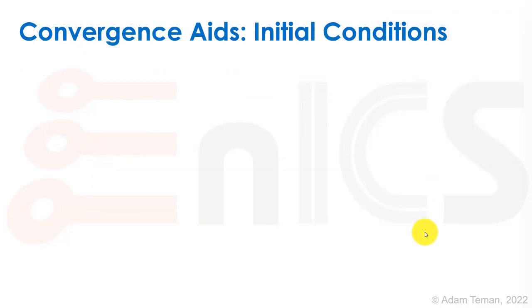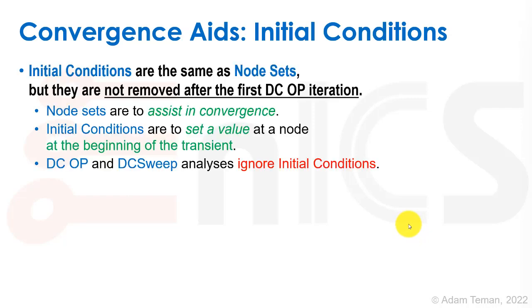Here too, in transient conditions, we have convergence aids. The important convergence aid is the initial condition. Initial conditions are kind of the same as node sets. They put some voltage or current on a certain place in our solution. But the big difference is that they're not removed after the first DC operation. Initial condition is to set a value. A node set is used to assist in convergence. With the node set, we placed a voltage on a certain node for the first guess, then removed it as we iterated through the convergence process.